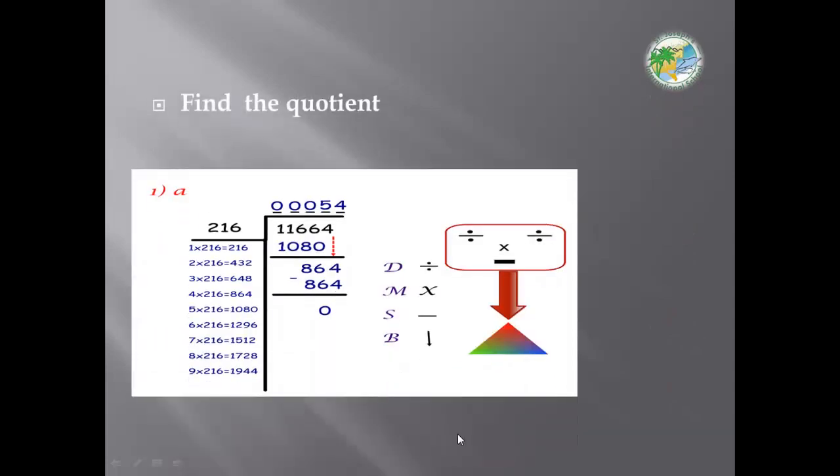Find the quotient for these numbers. This is called rapid divisions. Do you remember the steps of divisions? Does McDonald's serve cheeseburger? Does means divide, multiply, subtract, and bring down new digit numbers.